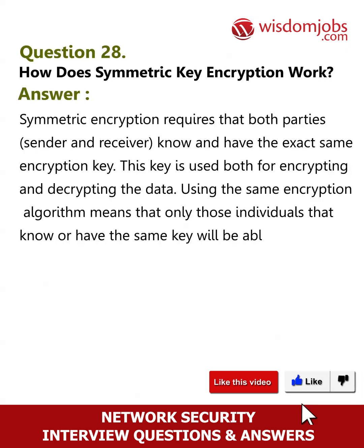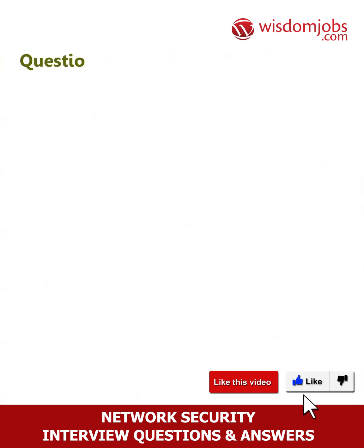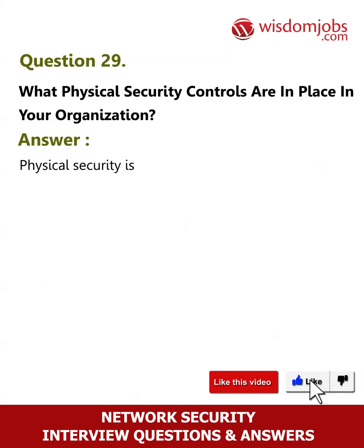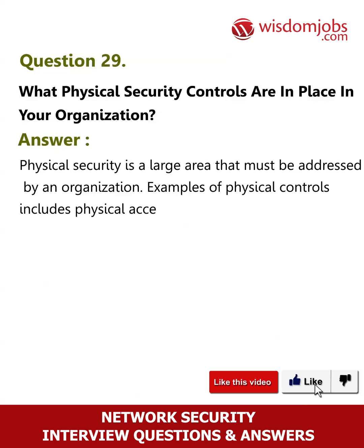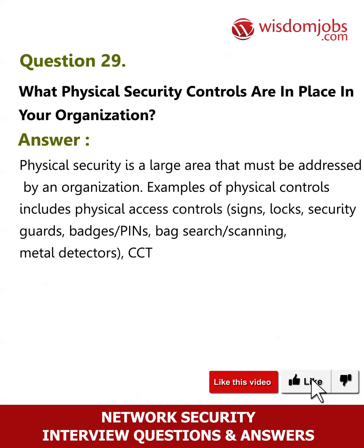Question 29: What physical security controls are in place in your organization? Physical security is a large area that must be addressed by an organization. Examples of physical controls include physical access controls, signs, locks, security guards, badges, pins, bag search, scanning, metal detectors, CCTV, motion detectors, smoke and water detectors, and backup power generators.